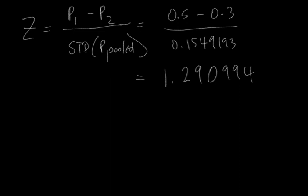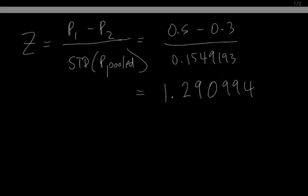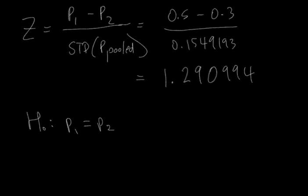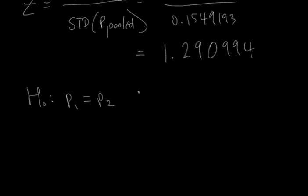Similar to previous calculations that we've done, let's think about the null hypothesis. The null hypothesis H0 is P1 is equal to P2. The alternative hypothesis HA is P1 is not equal to P2.